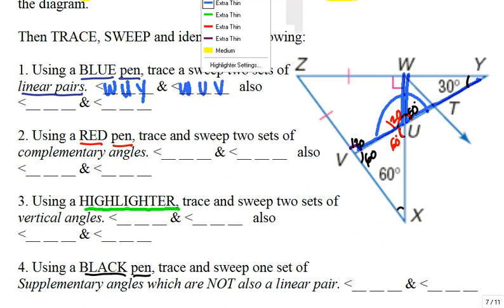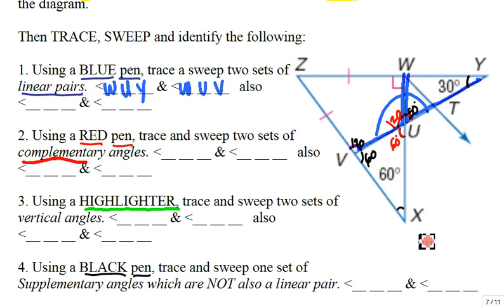Now, let's take a look here using red. Complementary angles. Complementary means it adds up to 90 degrees. And that would be Y, W, T and then T, W, U.